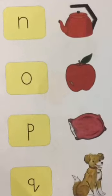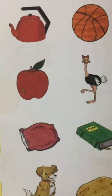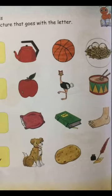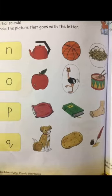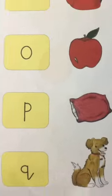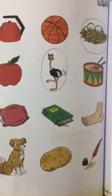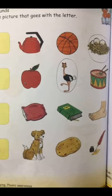The next letter is O. Aapke paas pictures kaunsi di gayi hain? Apple — apple ki sound O se nahi milti. The next one is ostrich — O se mil rahi hai na? Drum ki picture bhi thi — D sound nahi hai O ki. Toh yahan par aapne ostrich ko circle karna hai. The next letter is P — pictures hain: pillow, book, and foot. P for pillow ki sound match karti hai na, so you have to circle the pillow.